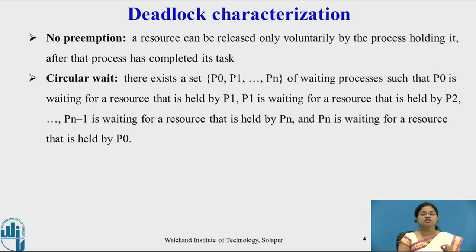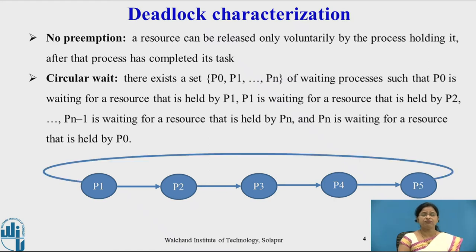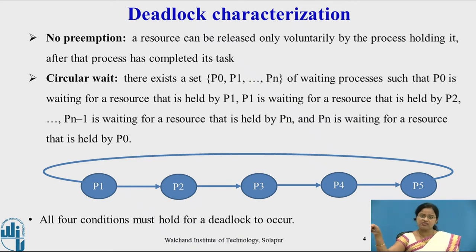The next condition is circular wait. In circular wait, suppose there exist processes P0 to Pn, and these processes are waiting such that P0 is waiting for P1, P1 is waiting for P2, P2 waiting for P3, P4 waiting for P5, and again P5 is waiting for P1. So this situation is called circular wait — the previous process is waiting for the next, and the last process is again waiting for the first.